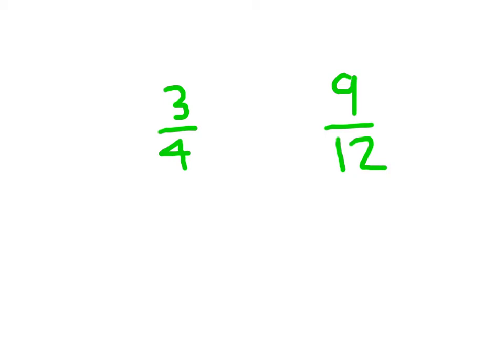In order to compare them, we have to have like denominators. And what we're going to do is change the fourths into twelfths by multiplying by 3 in the denominator and the numerator.